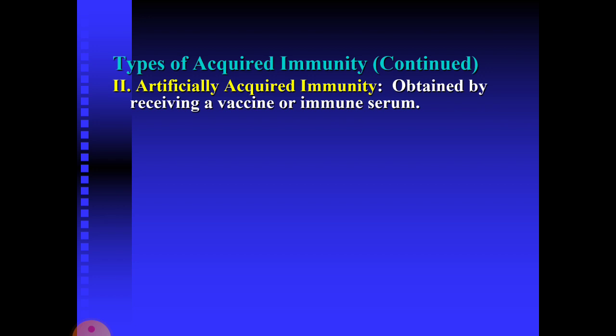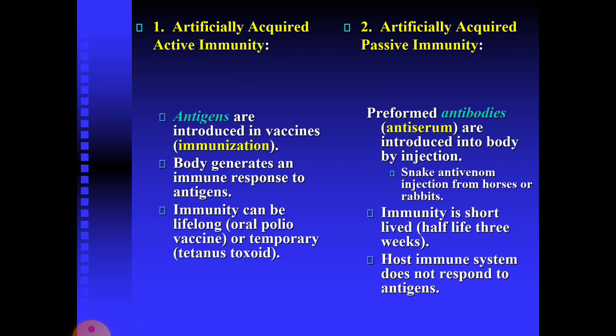Moving on to the second type of acquired immunity — artificially acquired immunity, obtained by receiving a vaccine or immune serum. It is of two types: artificially acquired active immunity and artificially acquired passive immunity. In artificially acquired active immunity, vaccines or immunization prompt the body to generate an immune response. This immunity can be lifelong, as with the oral polio vaccine, or temporary, as with tetanus toxoid. In artificially acquired passive immunity, preformed antibodies or antisera are introduced into the body by injection — for example, snake antivenom from horses or rabbits. The immunity is short-lived with a half-life of about three weeks, and the host immune system does not respond to the antigen.